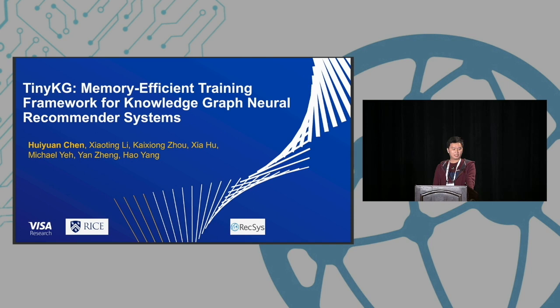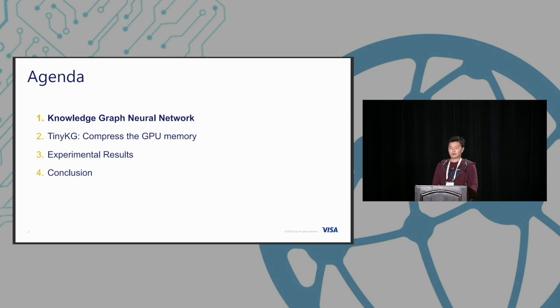This is a joint work between Visa Research and Rice University. Here's the agenda for today's talk. First, I will introduce knowledge graph neural networks. Second, I will introduce our proposed method for how to compress GPU memory for knowledge graphs. Third, we will introduce some experimental results, and finally I will conclude.